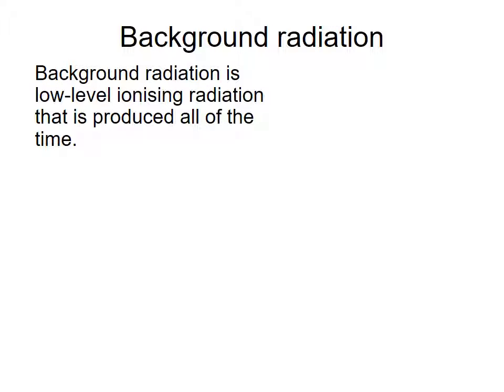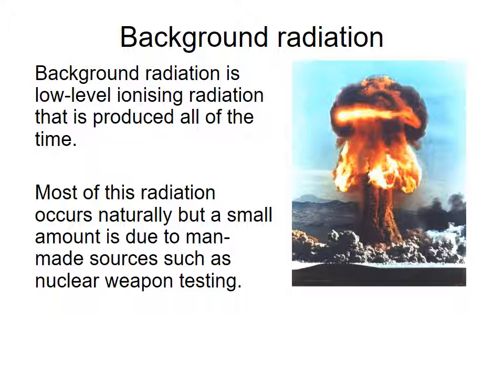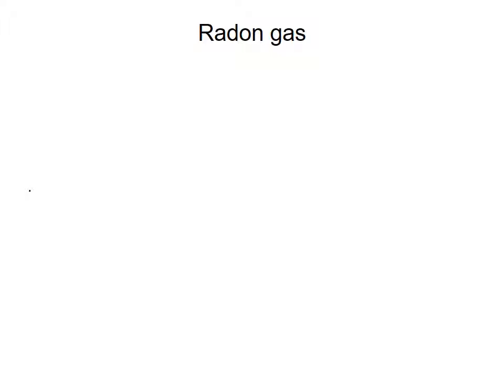So another concept you have to know is the concept of background radiation. Background radiation is the low-level ionizing radiation that's produced all the time. And the most common radiation occurs due to nuclear weapon testing, for example, in the Pacific, which doesn't happen so much, so nuclear weapon testing by the North Koreans.